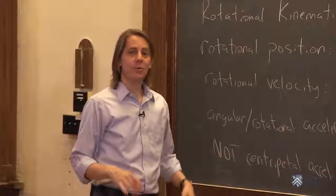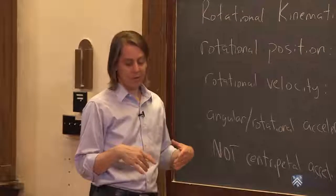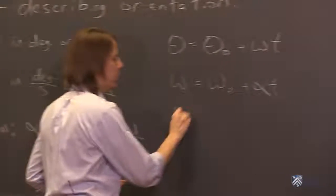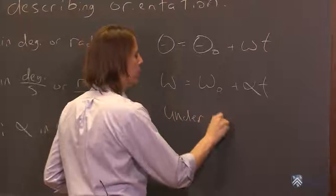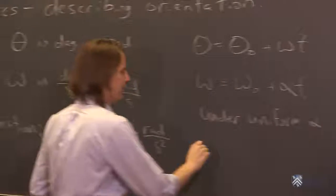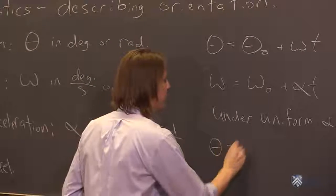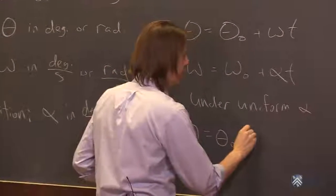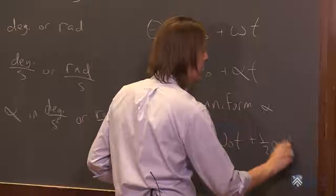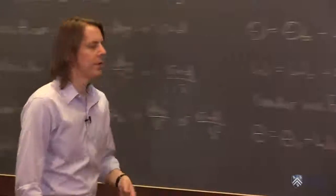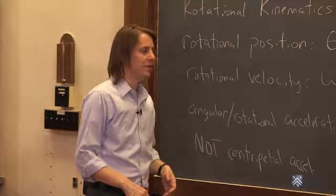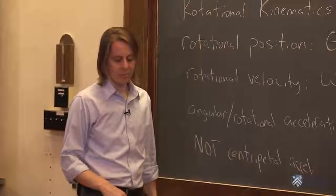Finally, if you use a little calculus, you can get an expression for theta under uniform angular acceleration. Under uniform alpha, you can get this expression similar to what you're used to: theta equals theta naught plus omega naught t plus one-half alpha t squared. Very similar to x equals x naught plus v_x naught t plus one-half a t squared.